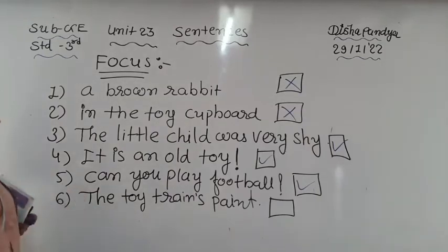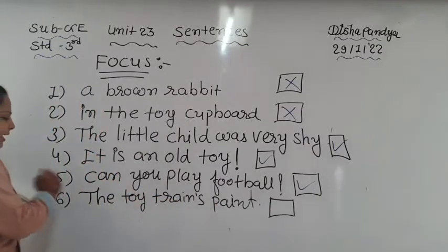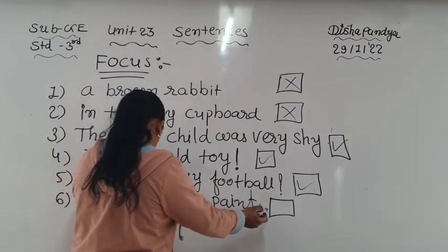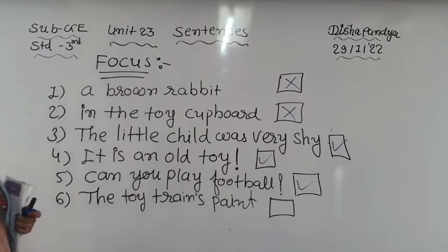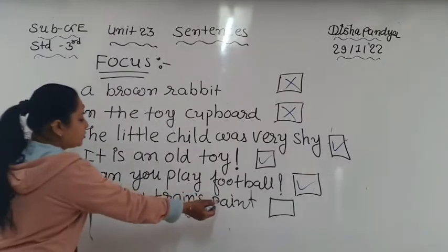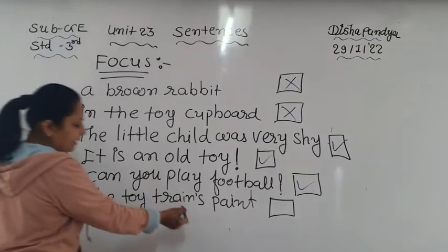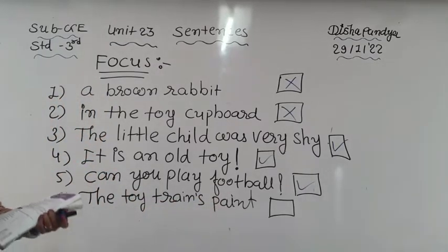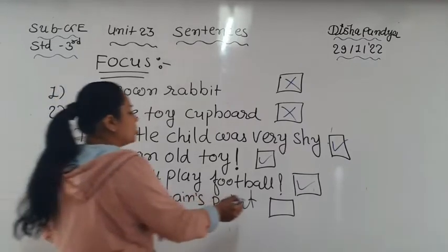Number six: 'The toy trains paint' - first letter is capital, but there is no mark at the end, and this group of words does not give any complete sense or complete thought - so this is not a sentence.